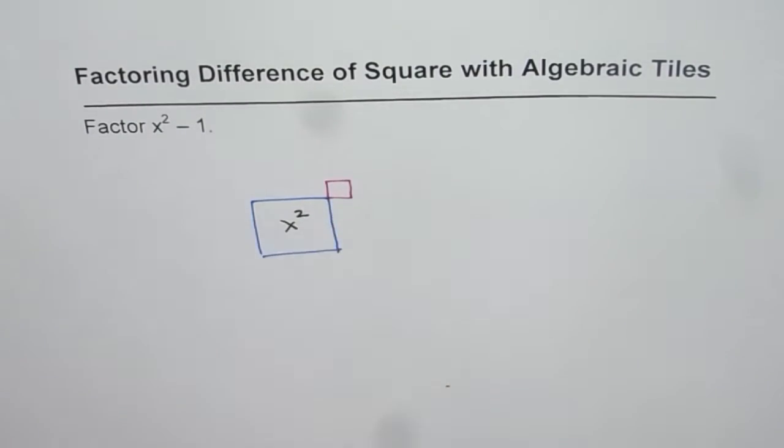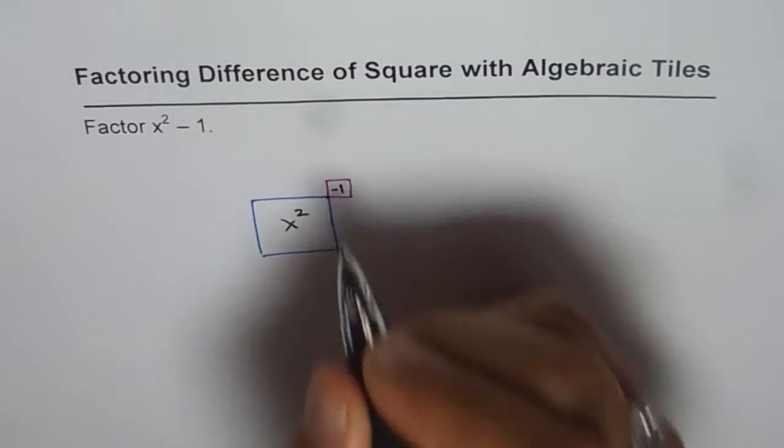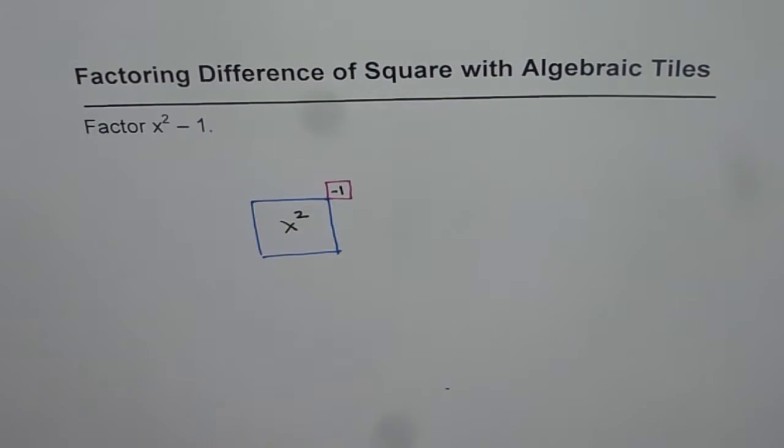So that is minus 1. So I have a blue tile of x square and a red tile for minus 1. Now to make it a perfect square, what can I do?